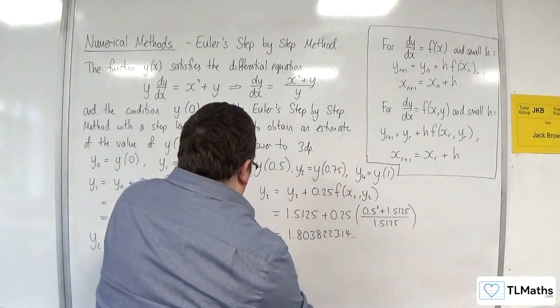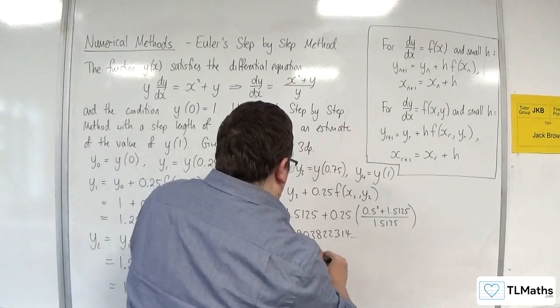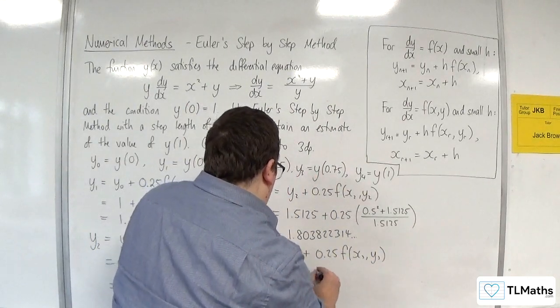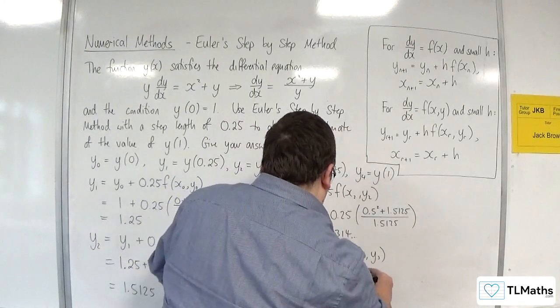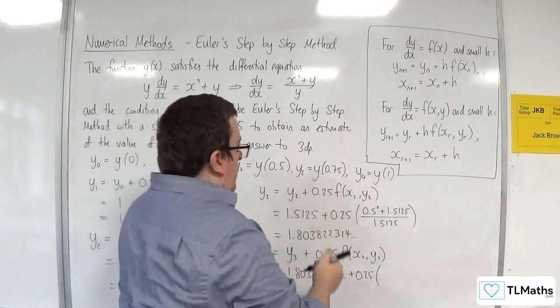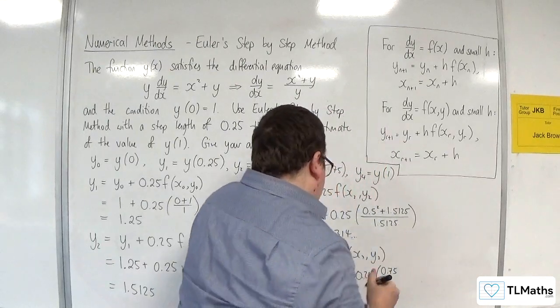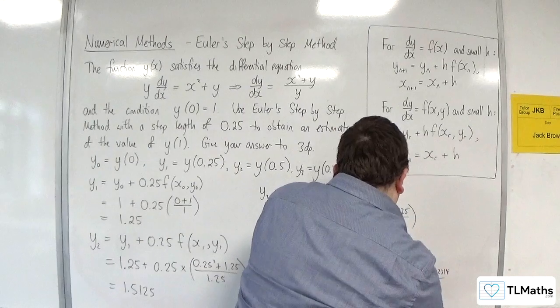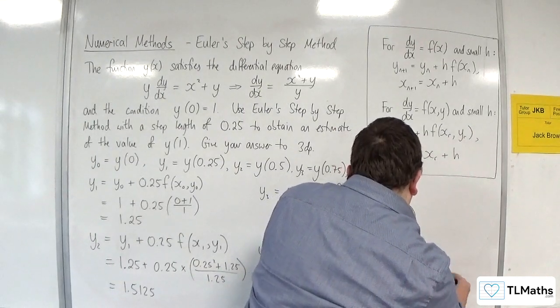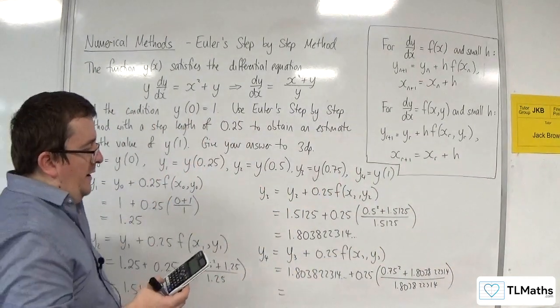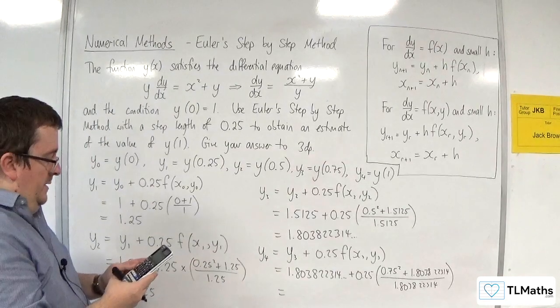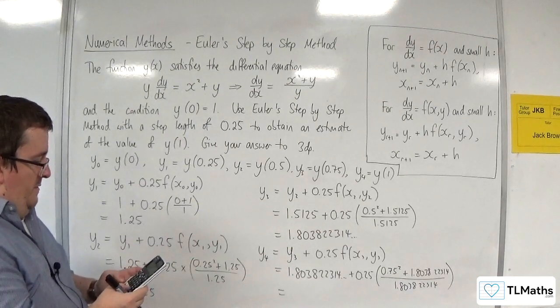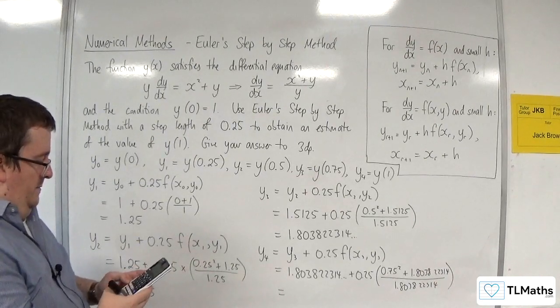So that's my y₃, and then y₄ will be y₃ plus 0.25 times f of x₃, y₃. So the 1.803822314 plus 0.25 times, now the x₃ is 0.75, so 0.75 squared plus the 1.803822314 over the 1.803822314. This is where you really want to be using your answer key on your calculator. So answer plus 0.25 times by 0.75 squared plus answer divided by answer.